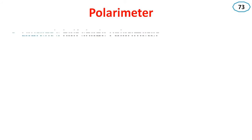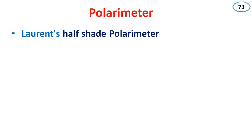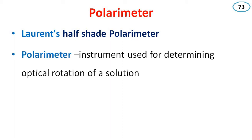Polarimeter. There are different types of polarimeter. We can discuss one among them, that is the Lorentz half-shade polarimeter. A polarimeter is an instrument used for determining optical rotation of a solution.